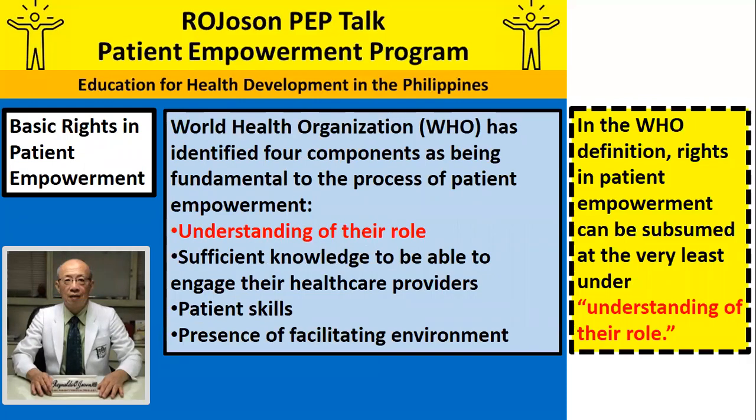The World Health Organization has identified four components as being fundamental to the process of patient empowerment. These are: understanding the role, sufficient knowledge to be able to engage their health care providers, patient skills, and presence of a facilitating environment. In the WHO definition, rights in patient empowerment can be subsumed, at the very least, under understanding of the role.